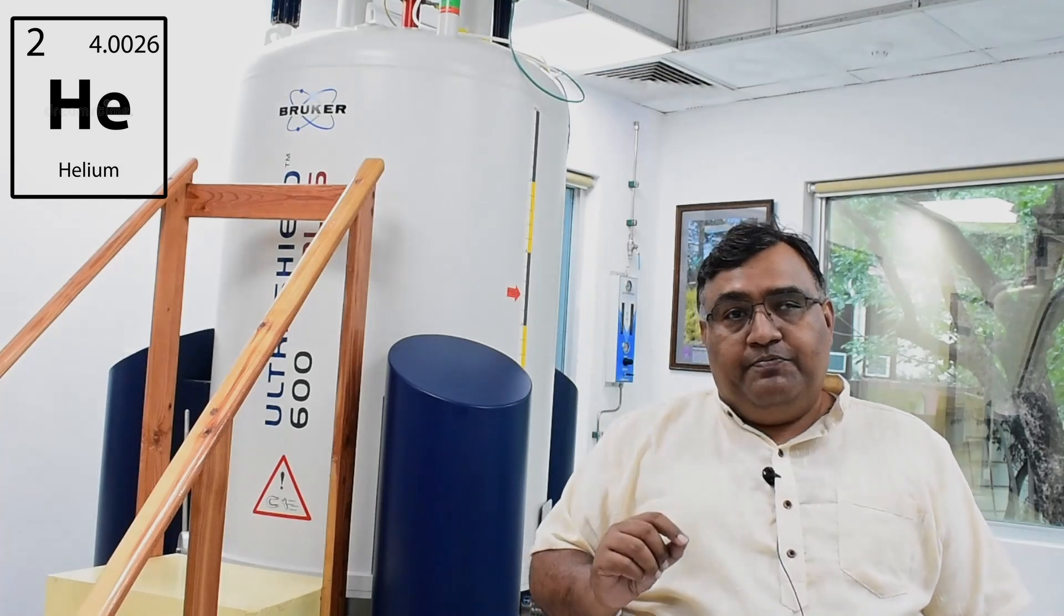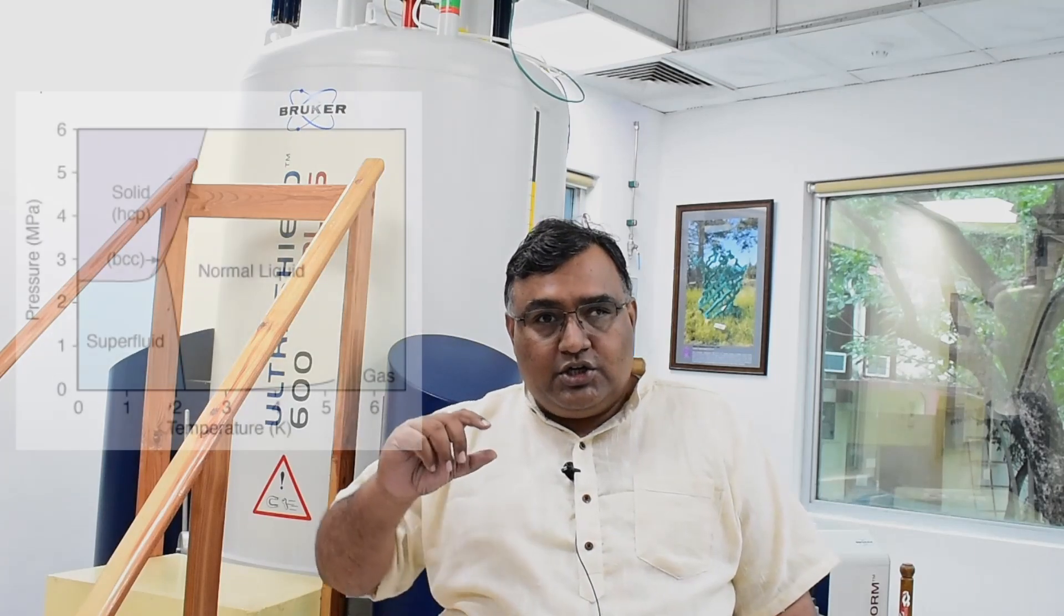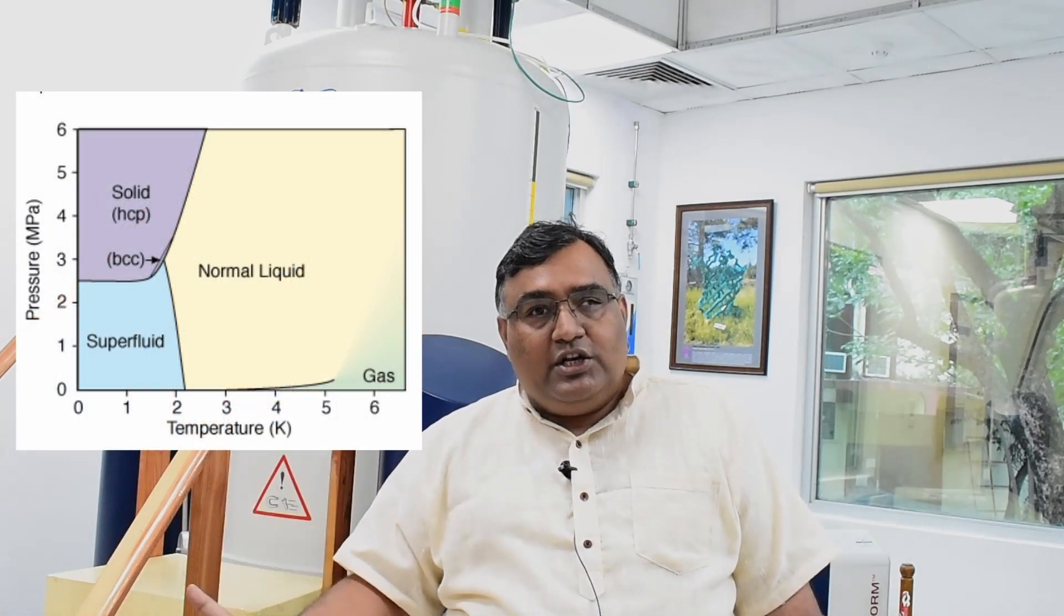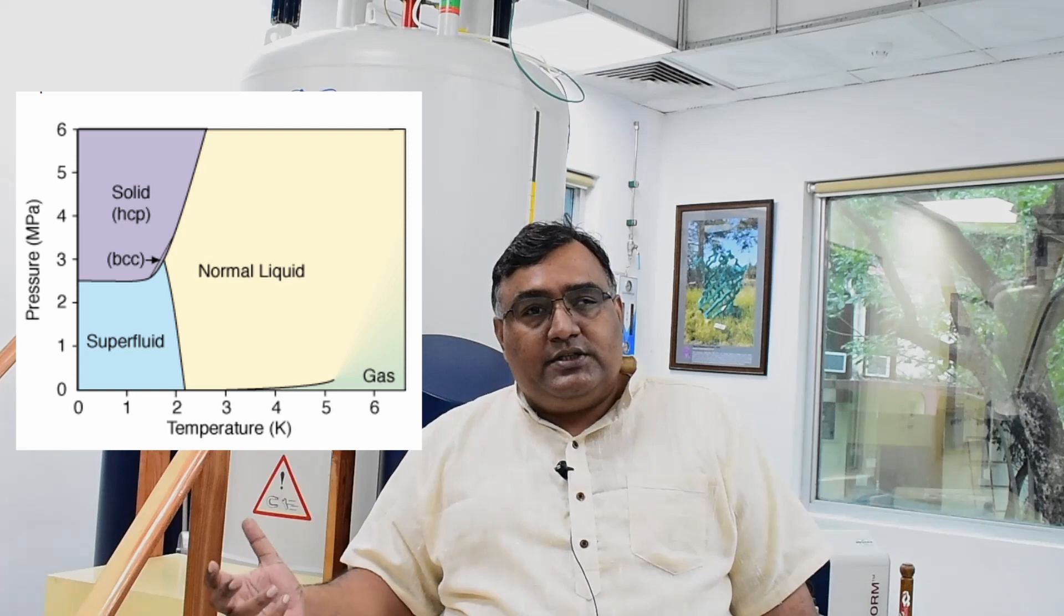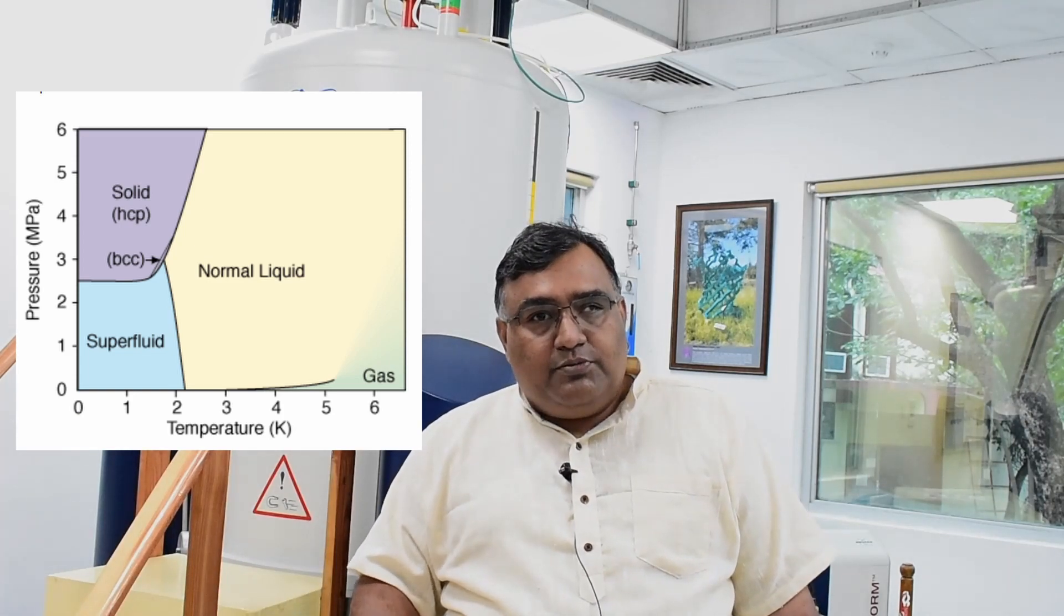So here we go to 4 Kelvin. Something that can only maintain the 4 Kelvin temperature is helium in its liquid form. The element helium, which is number 2 in the periodic table, if you cool it, essentially it goes from gaseous phase to liquid phase and in the liquid phase at 4 degrees it becomes liquid and it maintains superconductivity.